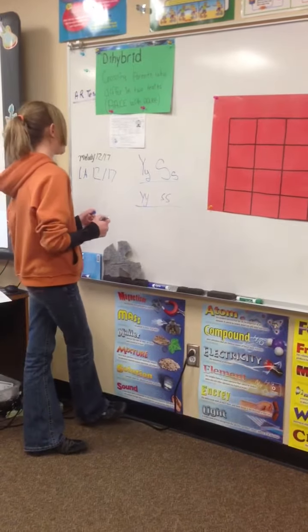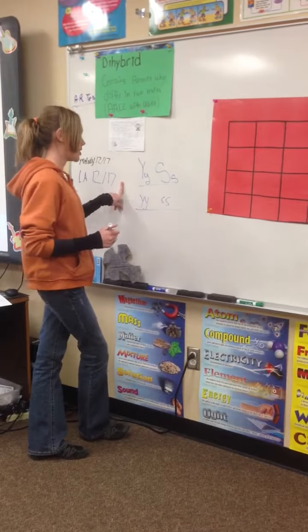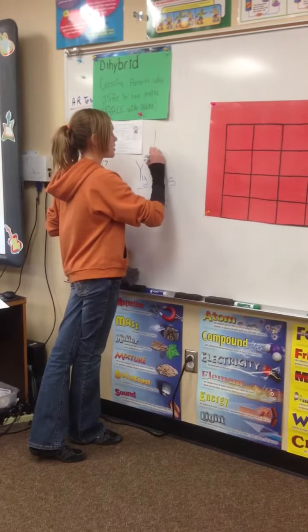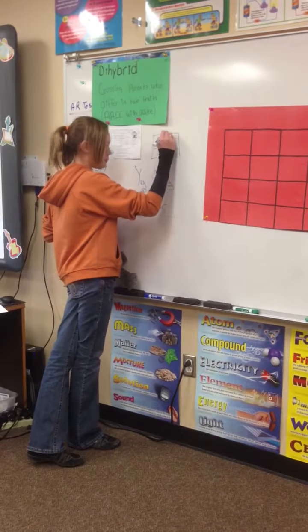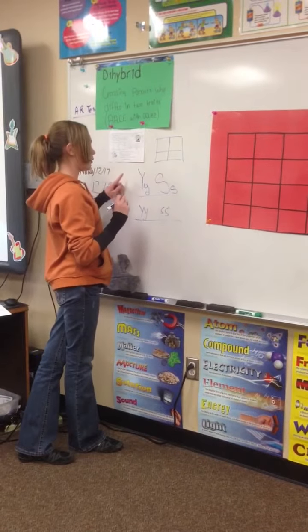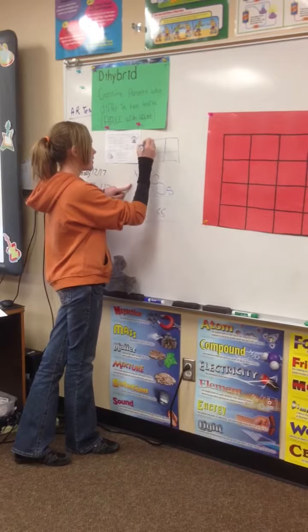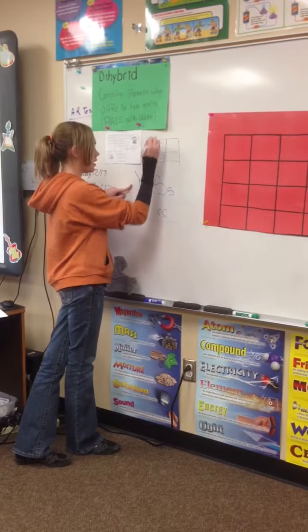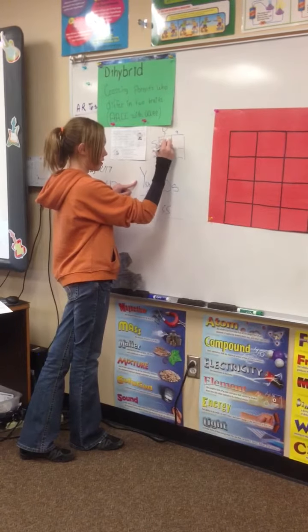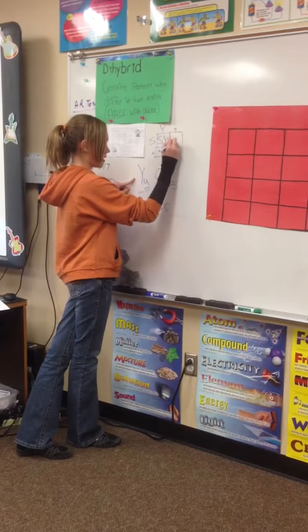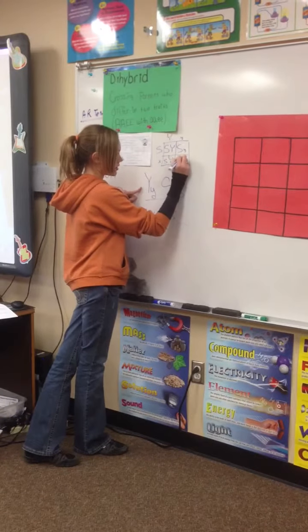To find out the gamete combinations for each, we have to do a monohybrid Punnett square for each. So for SpongeBob, we're going to put the S's on this side and the Y's up here. So this one here will be big S, big Y; big S, little y; little s, big Y; and little s, little y.